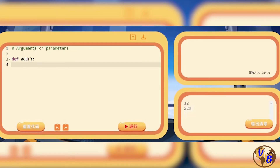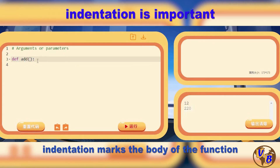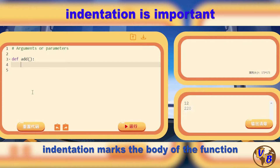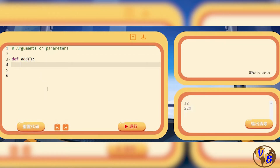What it simply means is: anything that is below this function definition — the first line being the function definition — anything that is indented below it, Python is going to say 'okay, this is the block of this function.' This is the code that will be executed each time we use the function name with its brackets.